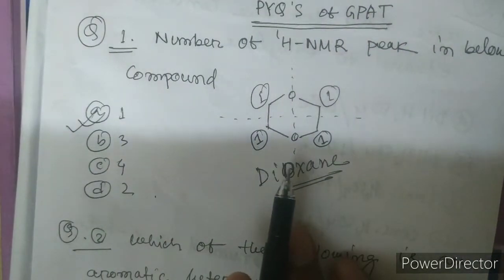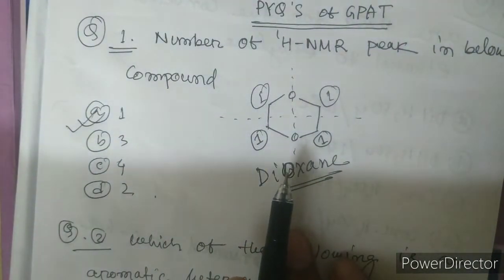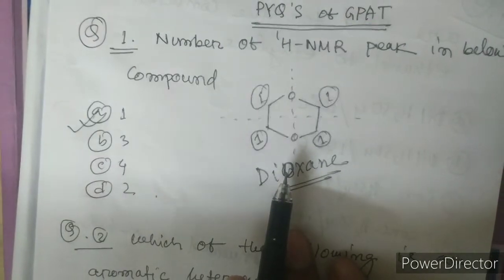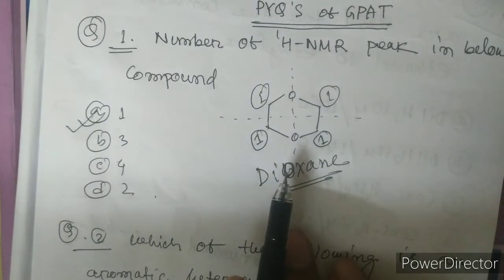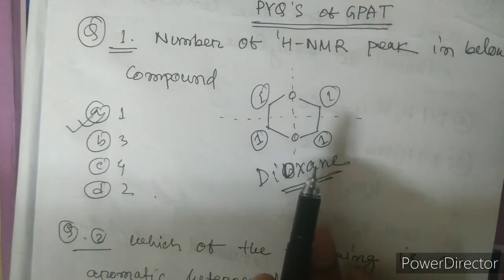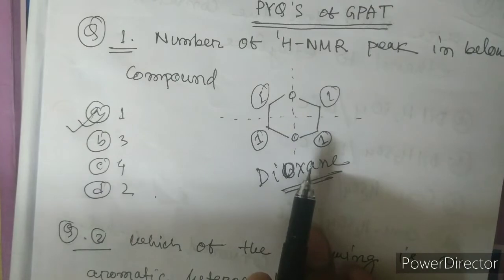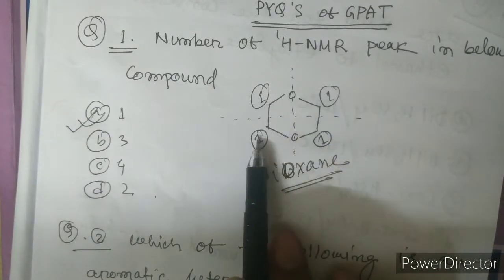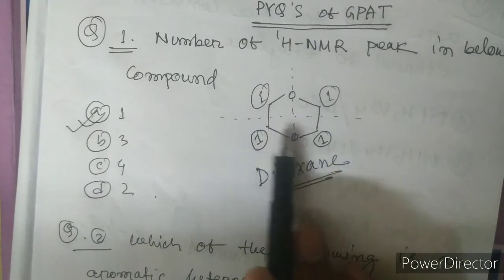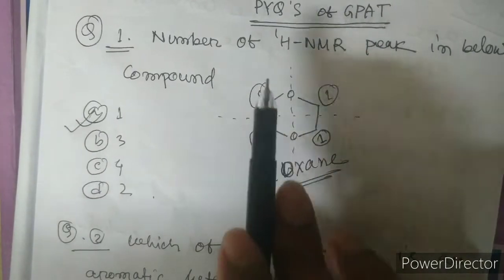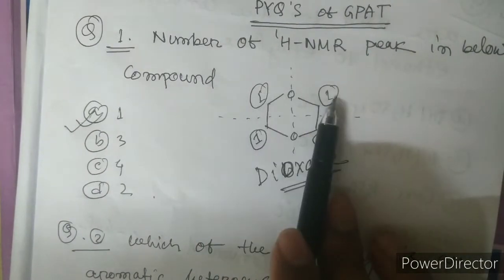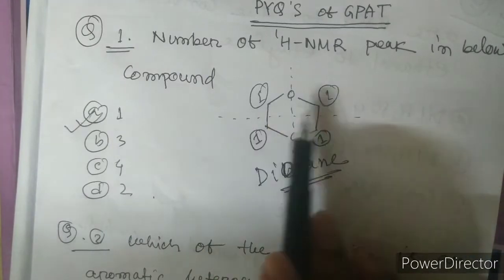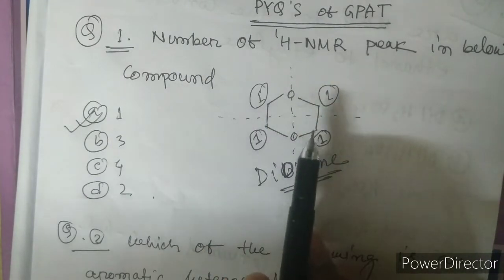You have to be sure about how many different types of hydrogen are present. Here only one type of hydrogen is present. Many people make the mistake of thinking there are two types, but it's only one peak.